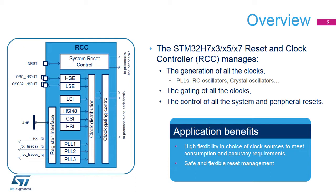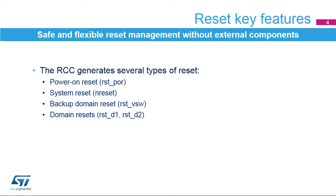The STM32H7 X3, X5, and X7 RCC provides high flexibility in the choice of clock sources, which allows the system designer to meet both power consumption and accuracy requirements. The numerous independent peripheral clocks allow a designer to adjust the system power consumption without impacting the communication baud rates, and also to keep certain peripherals active in low power mode.